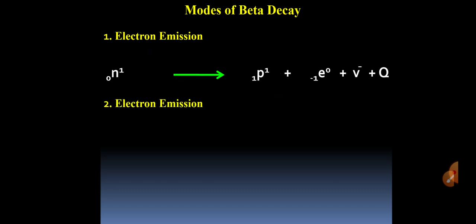Second mode is positron emission. In this, proton is converted into a neutron and along with a positron, neutrino is emitted.